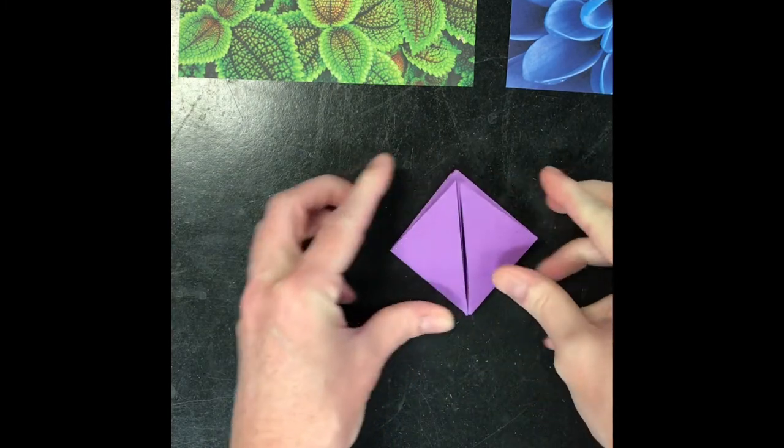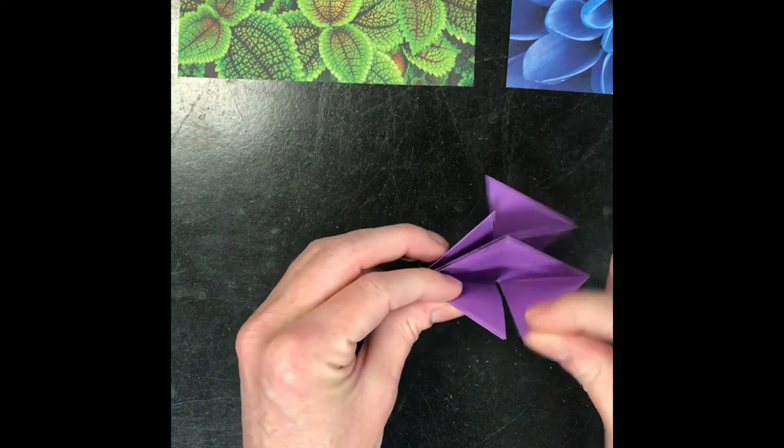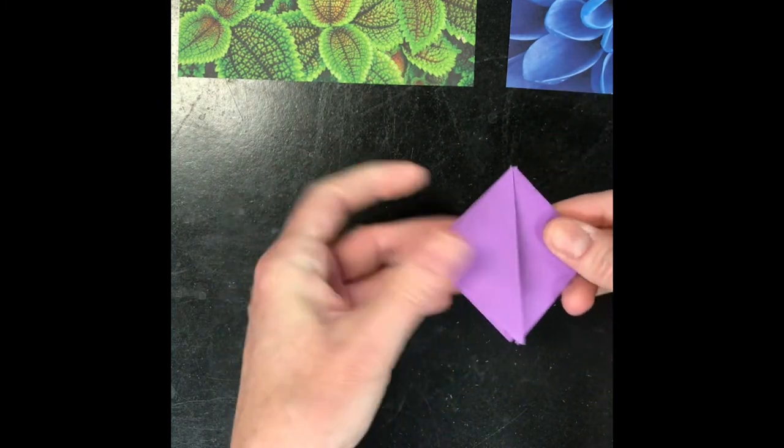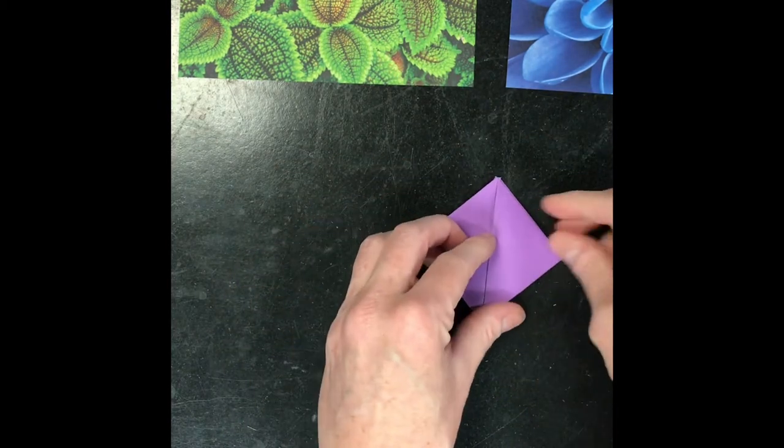Now, when you look at this shape, you can see those kind of loose triangle corners. Those are what we want on the bottom, so those will face down.